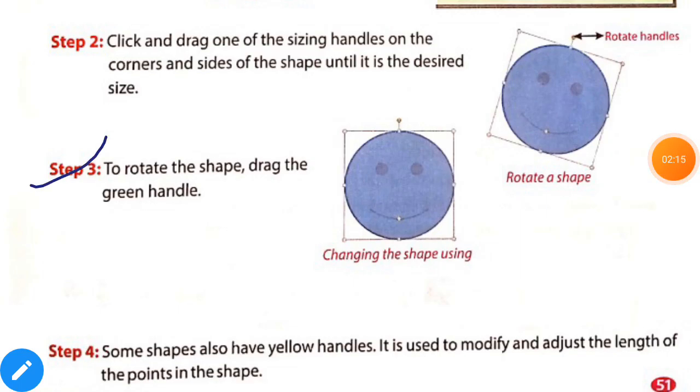After this step 3 is to rotate the shape, drag the green handle. Next step 4. Some shapes also have yellow handles. It is used to modify and adjust the length of the points in the shape.